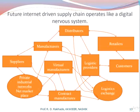Looking to the future, the internet-driven supply chain operates like a digital nervous system, where all parameters — distributors, manufacturers, retailers, logistics providers, customers, virtual manufacturers, and suppliers — are all interconnected. Order tracking can be done down to the smallest input material and status updates are in real time. Examples include platforms like Swiggy and Amazon, where you can check your order status in real time. This is the best example of modern supply chain management.